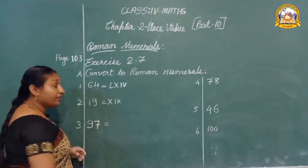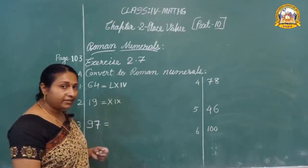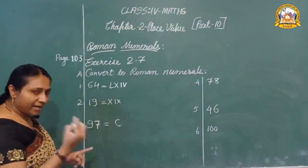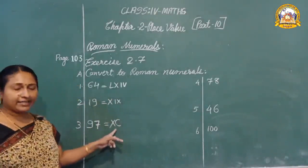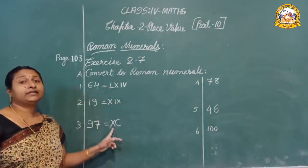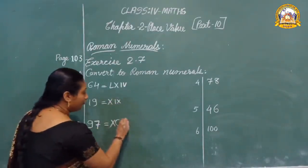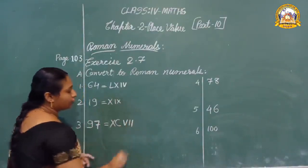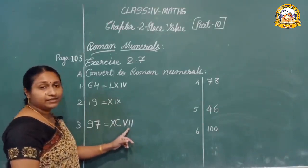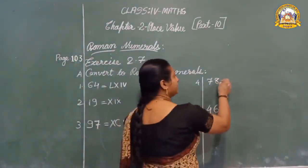Next, 97. Ninety-seven means 90 plus 7. For 90: hundred minus ten — C and X before it — XC. For 7: five and two ones — VII. So 97 is XCVII. Next, 78.